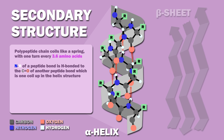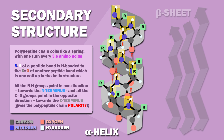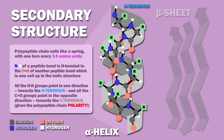Note also that all the NH groups point in one direction, towards the N terminus, and all the C double bond O groups point in the opposite direction, towards the C terminus, and this is what gives the polypeptide chain polarity. The C terminus is partially positively charged, while the N terminus is partially negatively charged.